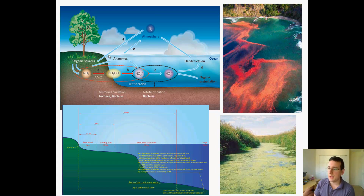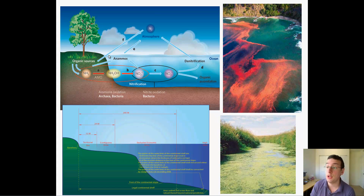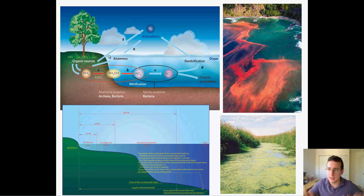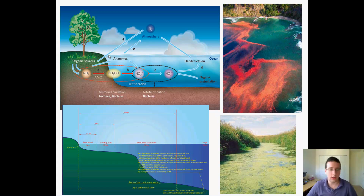Bacteria are very involved in the nitrogen cycle, and plants are the ones collecting those nitrates and nitrites to make proteins. Plants and algae need those things as nutrients. When there's a high abundance of these nutrients — too much decomposition leading to too many nutrients, or when we add fertilizer to the water — and fertilizer runs off our lawns into rivers and then into the ocean, we blast the oceans full of these nutrients.